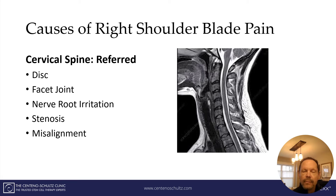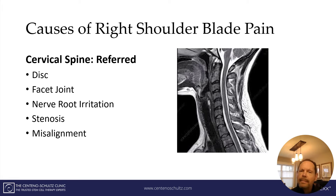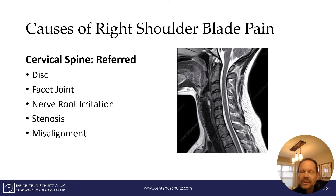Other causes of right shoulder blade pain are those that do not involve direct injury but are referred — they are felt in the shoulder, but the actual tissue damage is somewhere else. The first referred cause that comes to mind is neck pain. Neck injuries can include injuries to the disc, the facet joints, irritation to one or more of the exiting nerve roots, stenosis — otherwise known as narrowing — and misalignment.